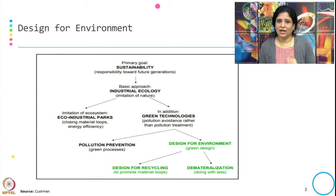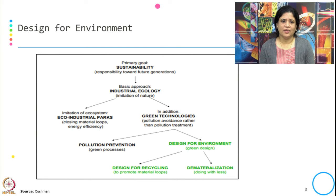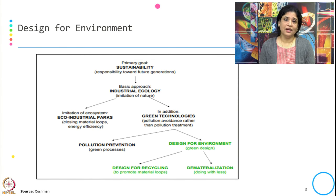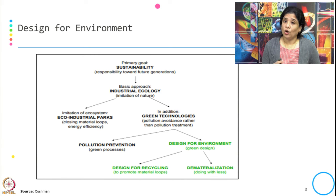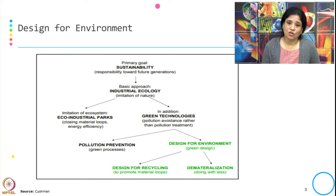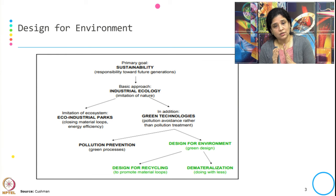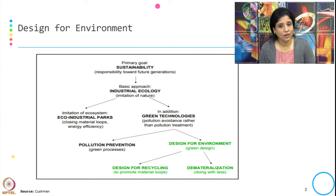When we get into the imitation of the ecosystem, we get into the eco-industrial park, closing the material loops, and energy efficiency as a few of the action points. Apart from this we can get into green technology, and green technology talks about pollution avoidance rather than pollution treatment. This green technology can involve pollution prevention — we get into green processes or we get into Design for Environment, that is green design. It means that from the design stage of the product, sustainability concerns and green concerns get incorporated into the design of the product.